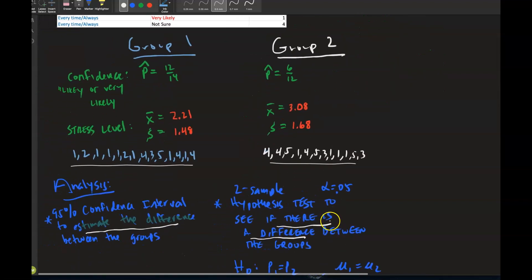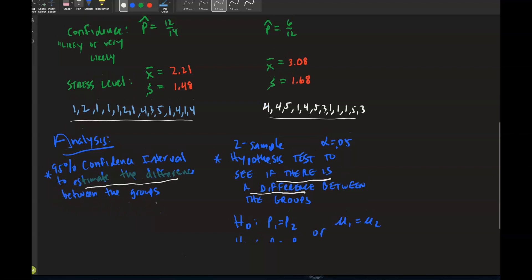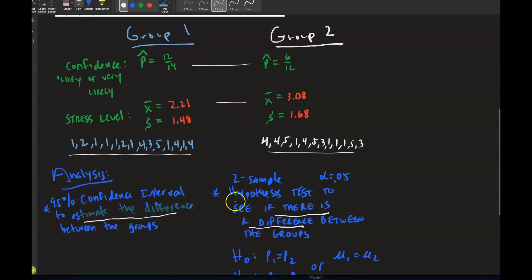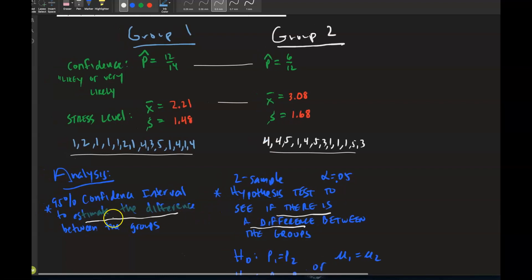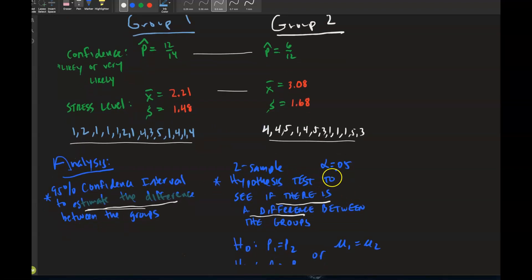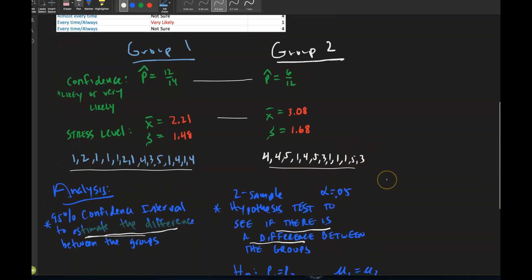After you've organized your data, you do your analysis. You're going to do a 95% confidence interval using this data to estimate the difference between the groups — you get a lower bound and upper bound.